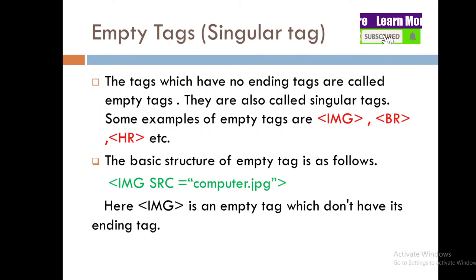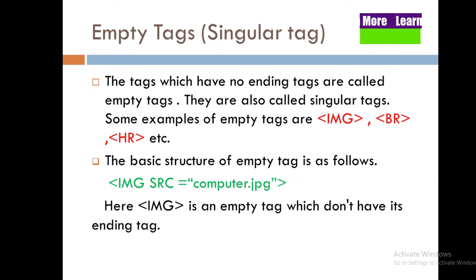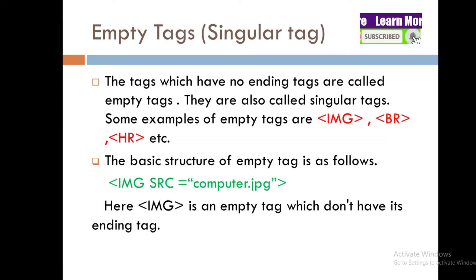Some examples of empty tags, as you can see in the red highlighted text, are the br tag, img tag, and hr tag. For example, img src equal to image dot jpg — the img tag is an empty tag which does not have an ending tag.